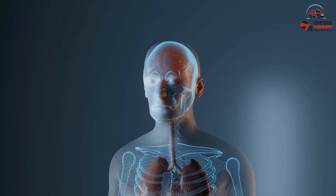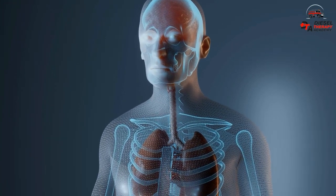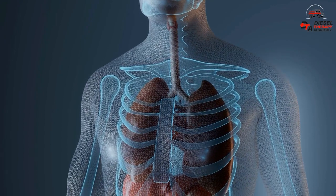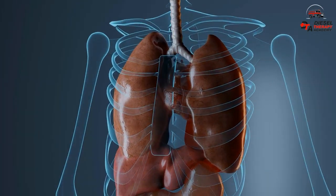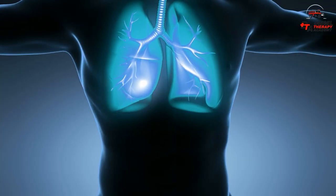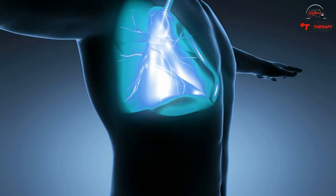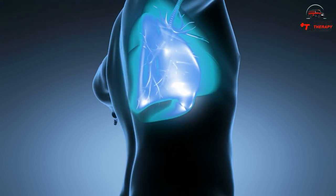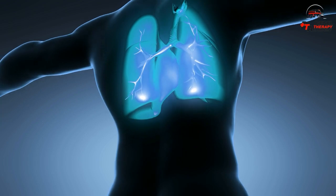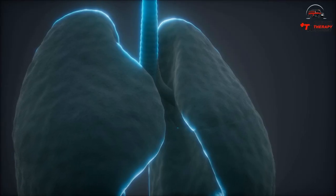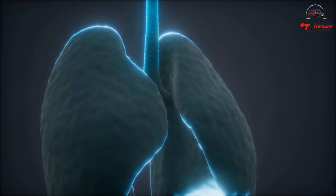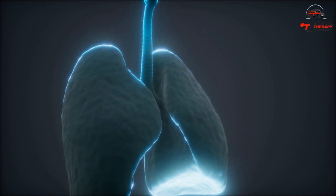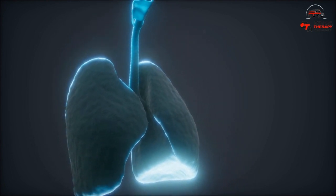How do we breathe? It is something we do all the time and most of the time without thinking about it. Ventilation is the movement of air in and out of the lungs. Respiration is the exchange of gases. There are two types: pulmonary respiration, which takes place when oxygen and carbon dioxide diffuse between the thin membrane of the alveoli and the capillary beds, and cellular respiration, which takes place when oxygen and carbon dioxide diffuse between the cell membrane and the capillary beds.